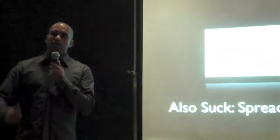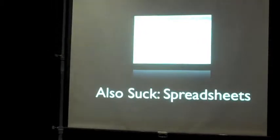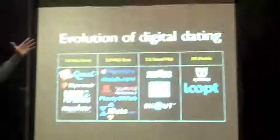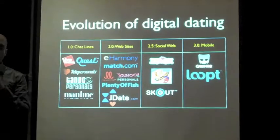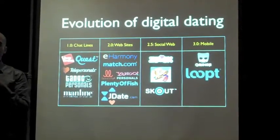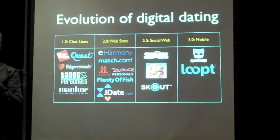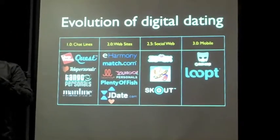Spreadsheets are the greatest thing that happened to the PC, and also the worst thing that ever happened to the PC. If you go back to 1982, they'll say the killer application on the PC is VisiCalc. So let's look at the evolution of digital dating. In the 80s, we had chat lines — you'd call up and the phone would go: press 1 if you're male, press 2 if you're looking for dating, press 2 if you're looking for a relationship, on and on.